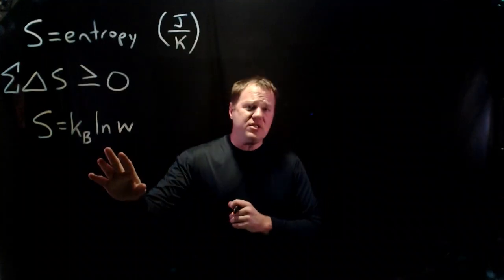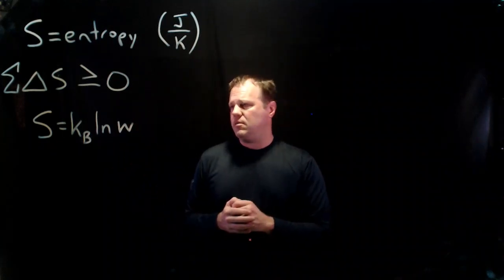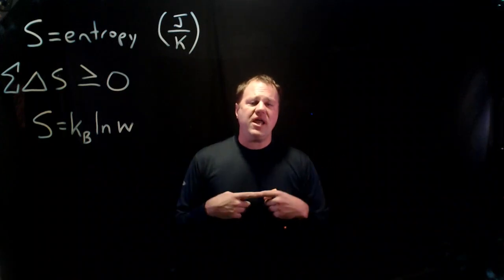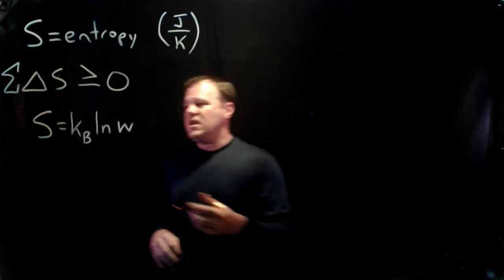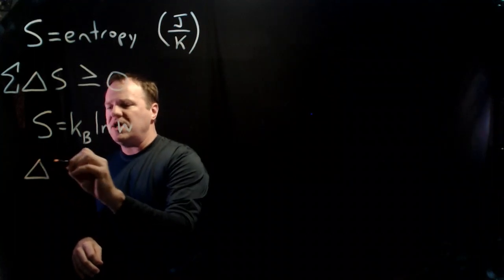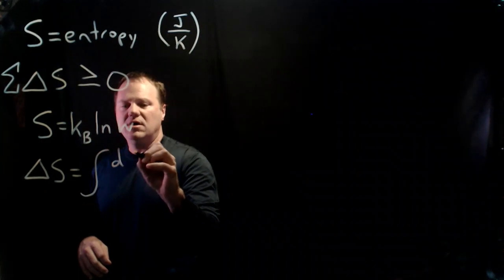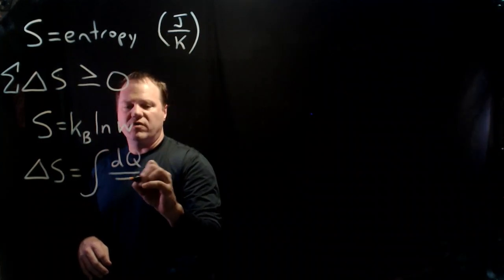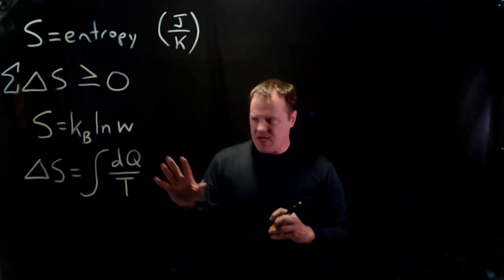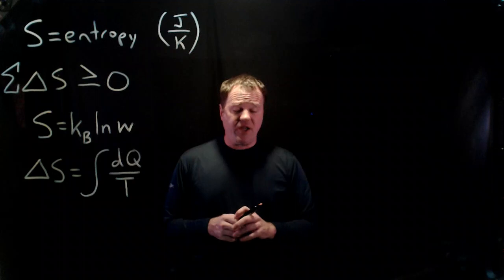But that is one way to directly calculate the entropy of a system. Another way is when two systems interact by exchanging energy in the form of heat, then you can use this formula that the change in entropy for the individual will be equal to the integral dQ over T. So if you have some sort of formula for the infinitesimal heat, you throw that in there, take the integral, and then you can calculate the change in entropy.